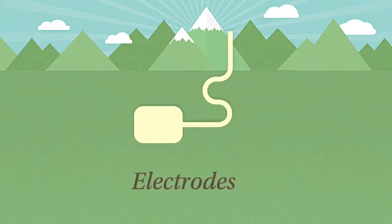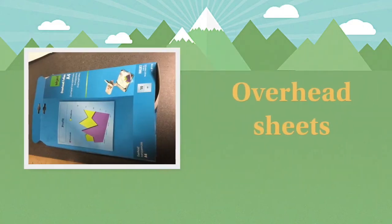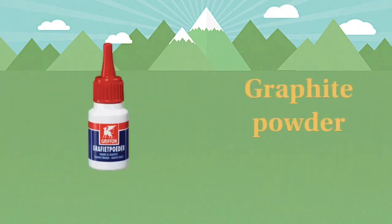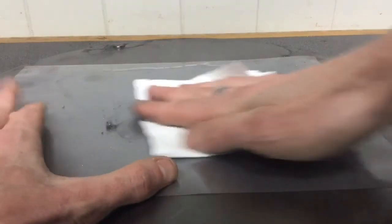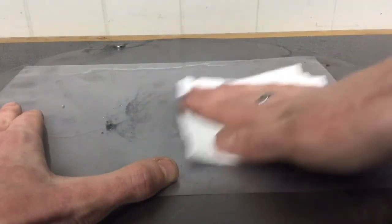Step one. You need two electrodes. With overhead sheets you can make those electrodes. And therefore you need some graphite powder. Polish the graphite on the plastic with a paper towel, which can be done very fast.